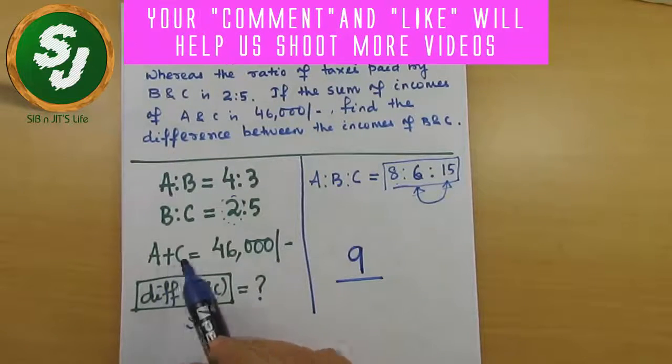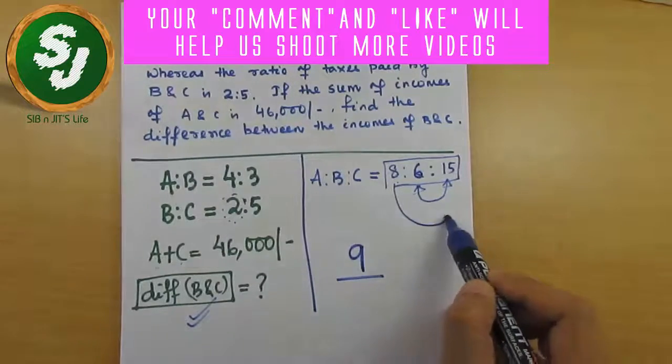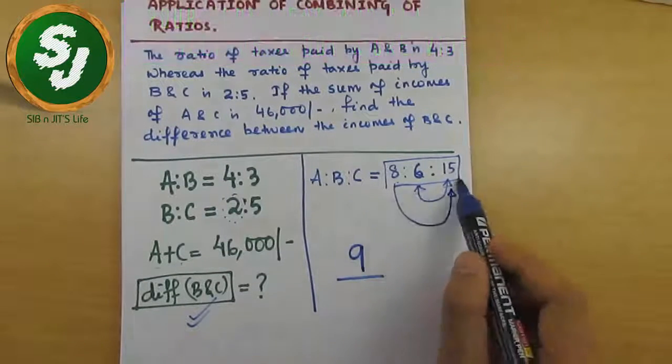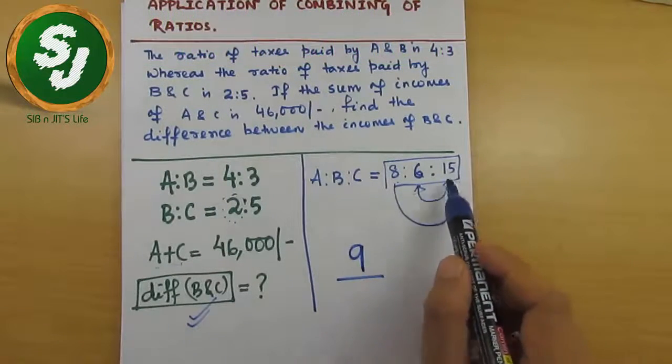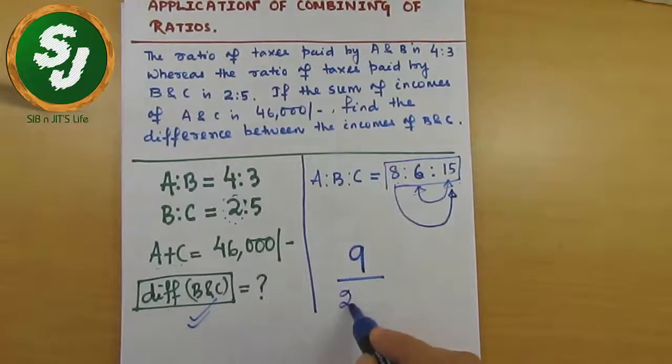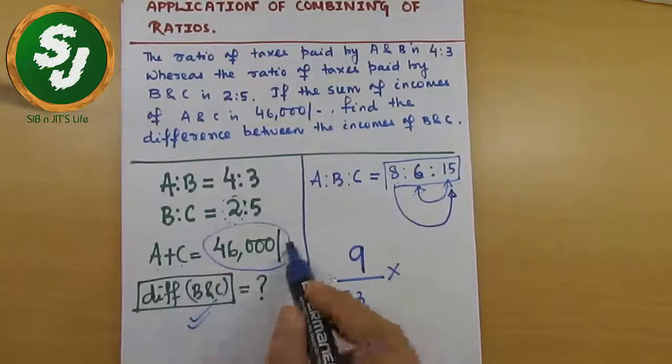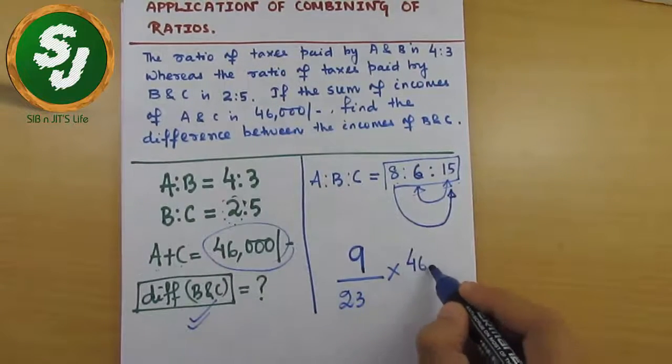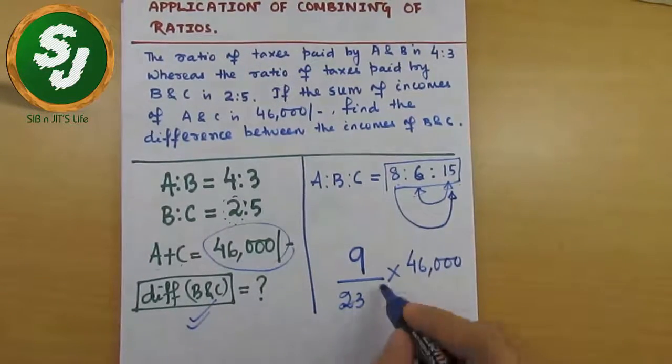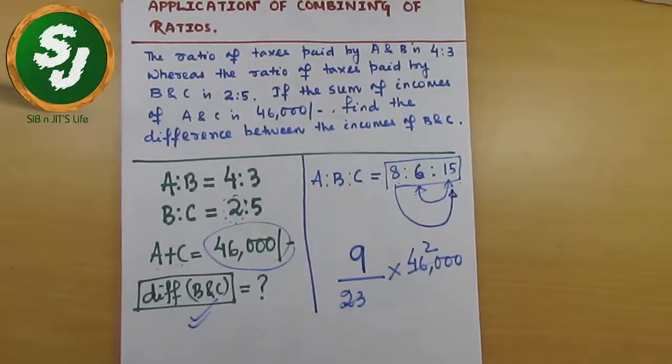And what is the given information here? A + C is the given information. So A + C, which is 8 + 15, equals 23. Multiply by the given number which is 46,000.